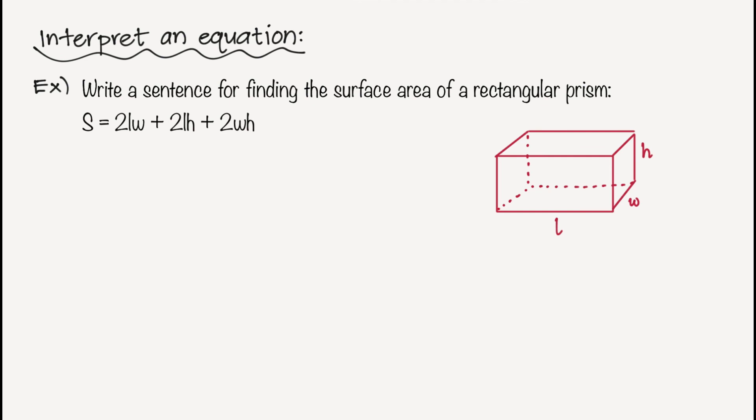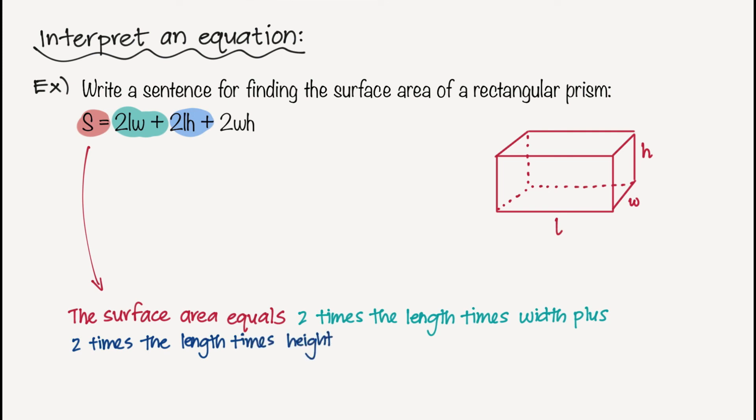So to finish this off, now we're going to interpret an equation. A lot of times in math, you are given different equations and you may not actually understand what they're talking about. So I'm just going to walk you through how to interpret one so that you can do it yourself later on. So here we have the formula for the surface area of a rectangular prism. So to translate this, I could just say the surface area equals, and I would just take it step by step, two times the length times the width plus, and then the next part, two times the length times the height plus the final part, two times the width times the height. And so as you can see, the prism is made up of a series of rectangles, and we are adding all of those up to get the surface area of this prism.